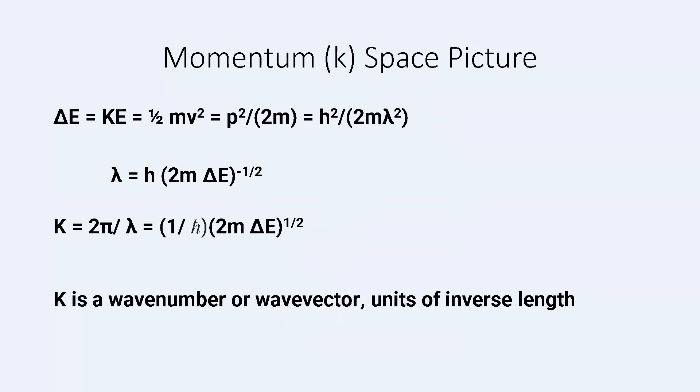In the free atom, the kinetic energy of a photoelectron excited by a given photon energy above a certain edge is given by the top equation. K can be thought of as a wave vector or wave number, with units of inverse length. It is defined by 2π over the de Broglie wavelength.